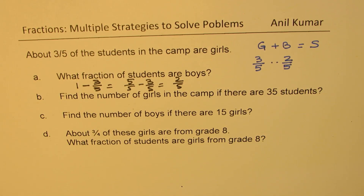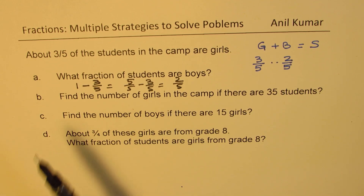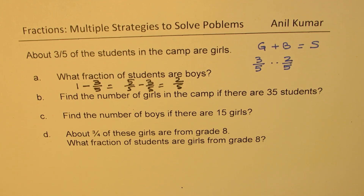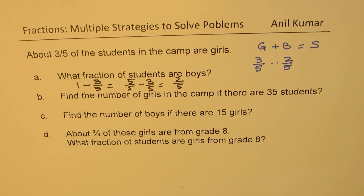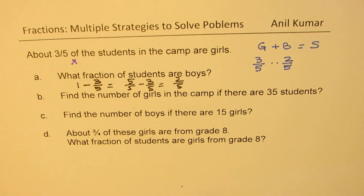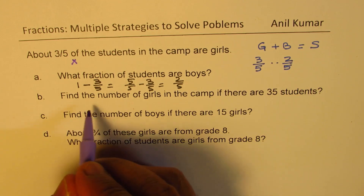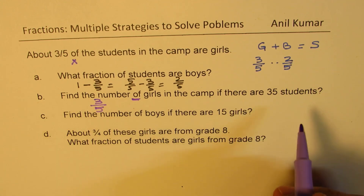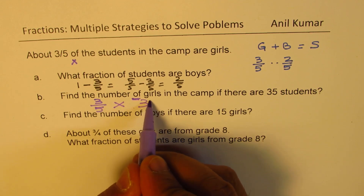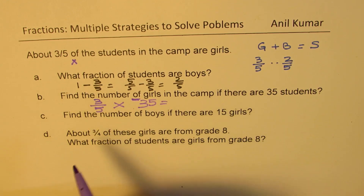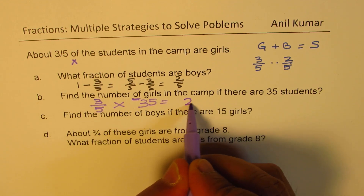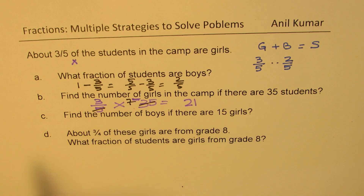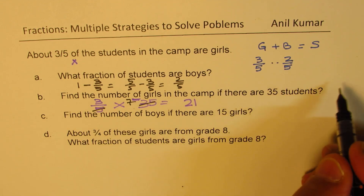Part B: Find the number of girls in the camp if there are 35 students. We know three-fifths of the students are girls. The word 'of' means multiplication. So three-fifths of 35 — that is three out of five multiplied by 35. We divide 35 by 5 to get 7, and 7 times 3 is 21. So we have 21 girls.